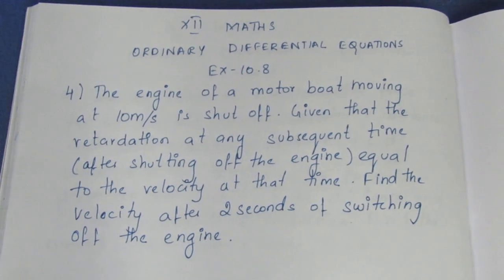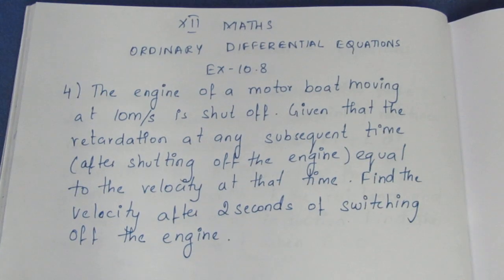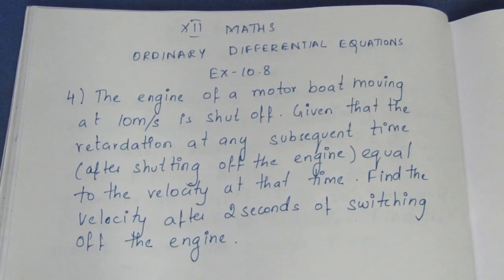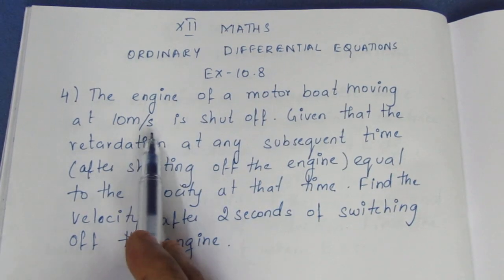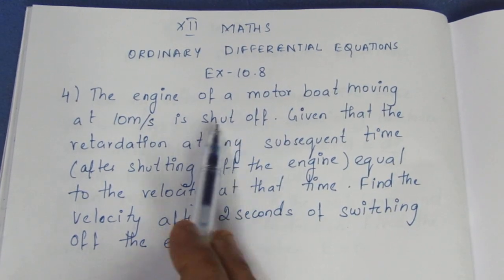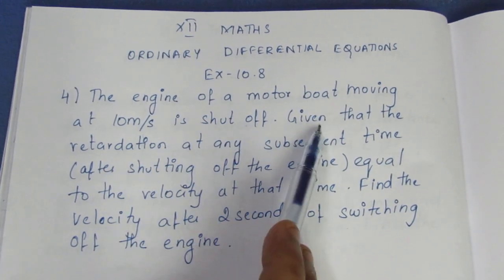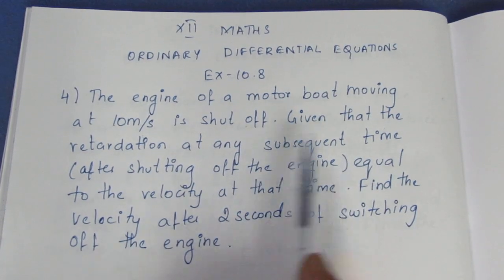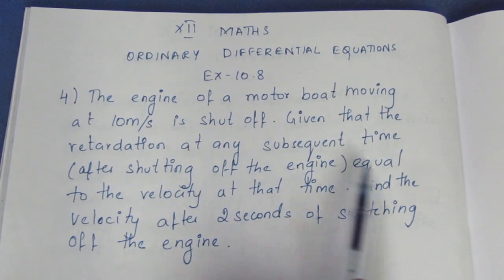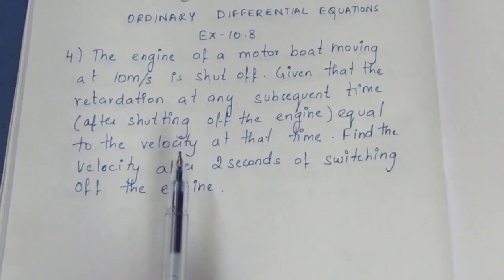Hello viewers, I am Aitli. In 12th Maths, Ordinary Differential Equations, Exercise 10.8, fourth problem: The engine of a motorboat moving at 10 meters per second is shut off. Given that the retardation at any subsequent time after shutting off the engine equals the velocity at that time, find the velocity after 2 seconds of switching off the engine.